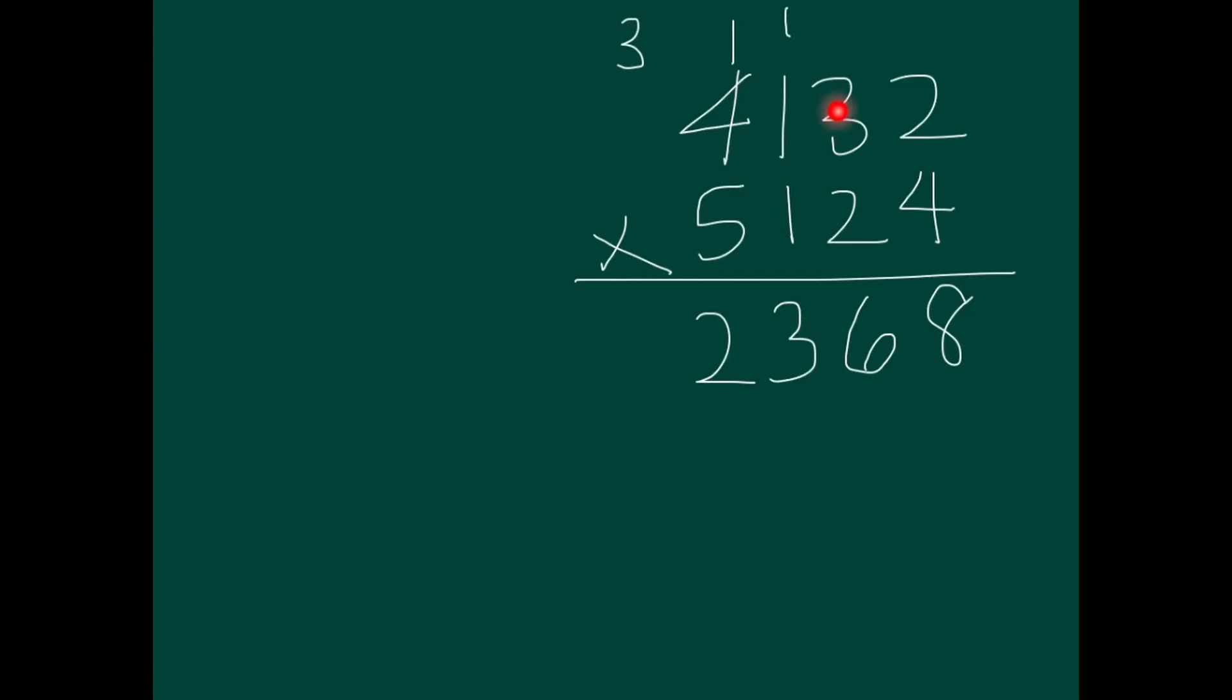And then we go like here, fifteen, plus eight, that is twenty-three, twenty-four, twenty-five, twenty-six, twenty-seven. Carry over two.